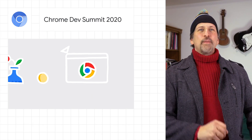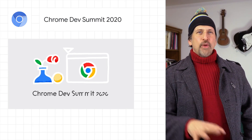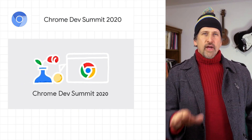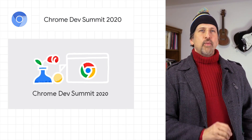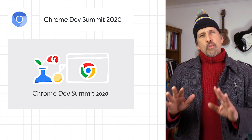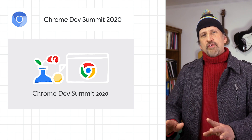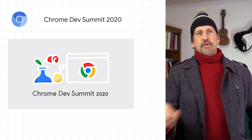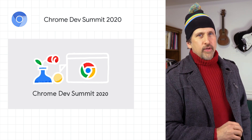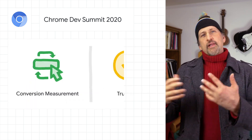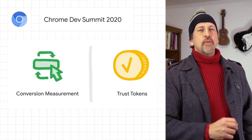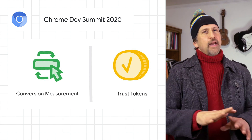At the Chrome Developer Summit last week, we shared updates on our efforts to strengthen the web. We're rethinking privacy from the ground up with alternatives to third-party cookies, like the Click Conversion Measurement API and the Trust Token APIs.